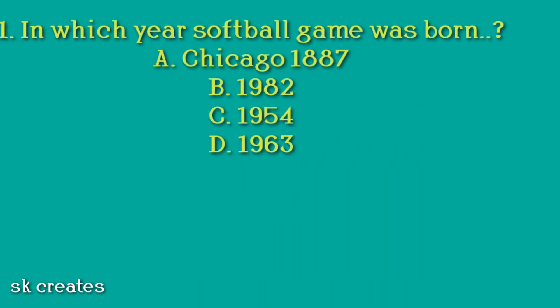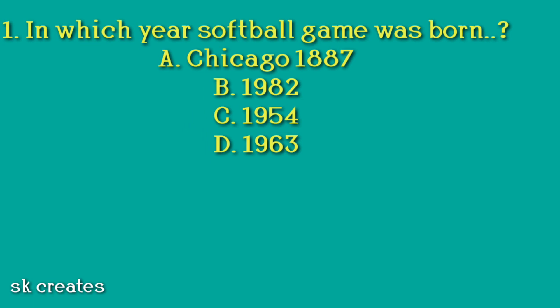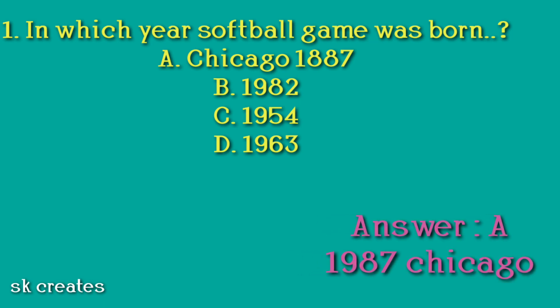Today's first question: In which year was the softball game born? A. Chicago, 1887. B. 1982. C. 1954. D. 1963. Answer: A. 1887, Chicago.